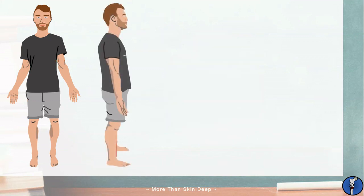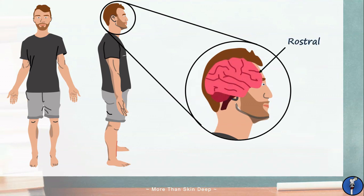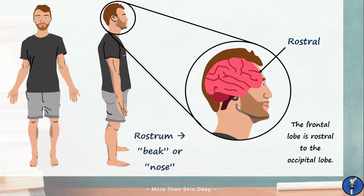Our final location term is one that isn't used very often. It is used only to describe a structure's proximity to the nose. For example, the frontal lobe of the brain is rostral to the occipital lobe, as it is closer to the nose than the occipital lobe is. Rostral comes from the root rostrum, which means beak or nose.